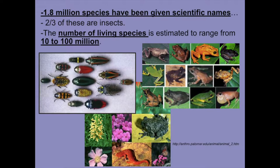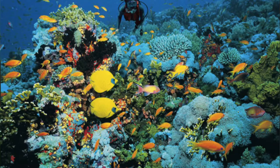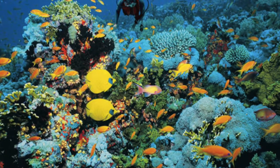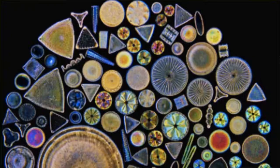Right now, we have about 1.8 million species that have been given a name — we found them, we named them, they're in the log. Two-thirds of these are insects. The estimated number of organisms on the planet that we think are around is between 10 to 100 million, so we've got a ways to go. On the PowerPoint, you can see just a few of the different types of organisms on the planet.